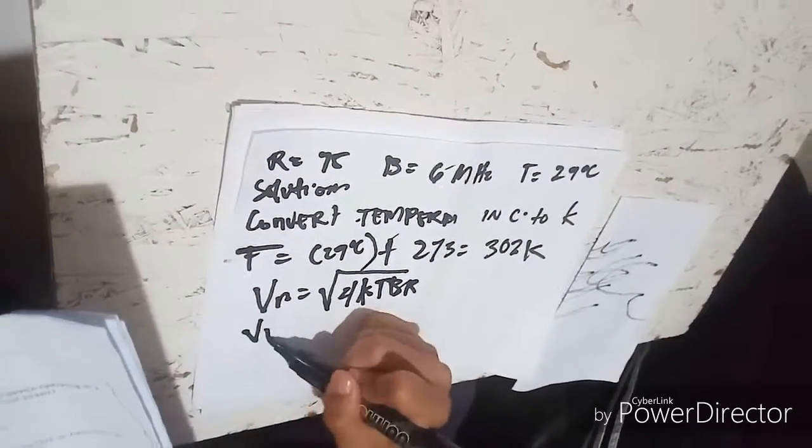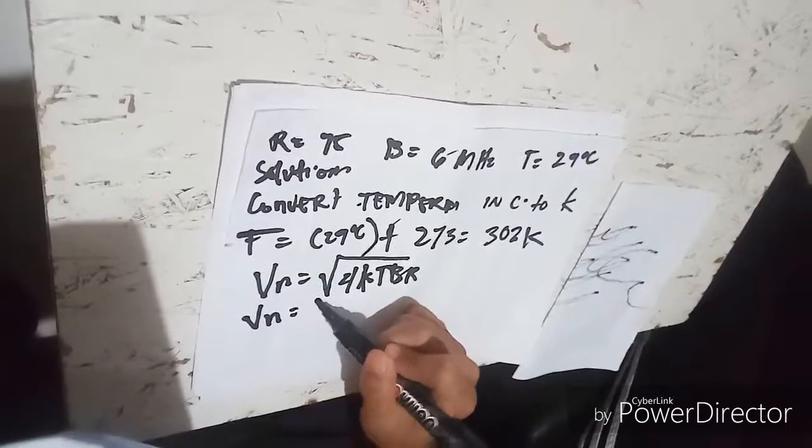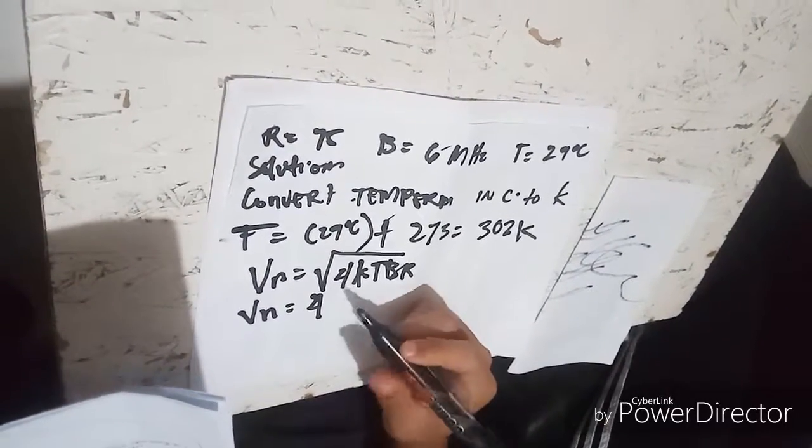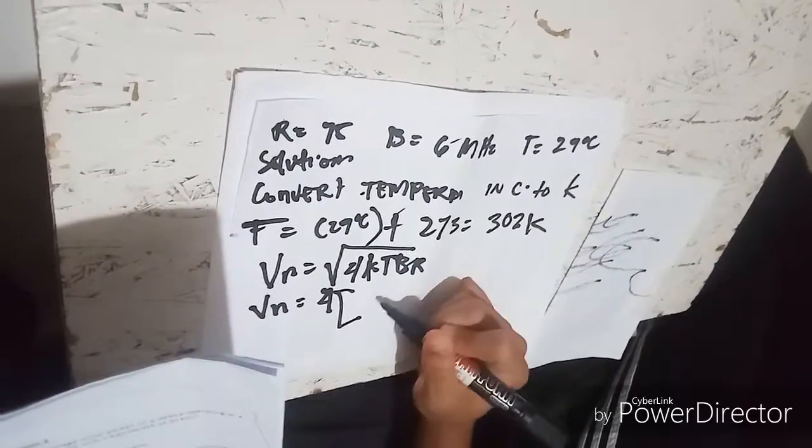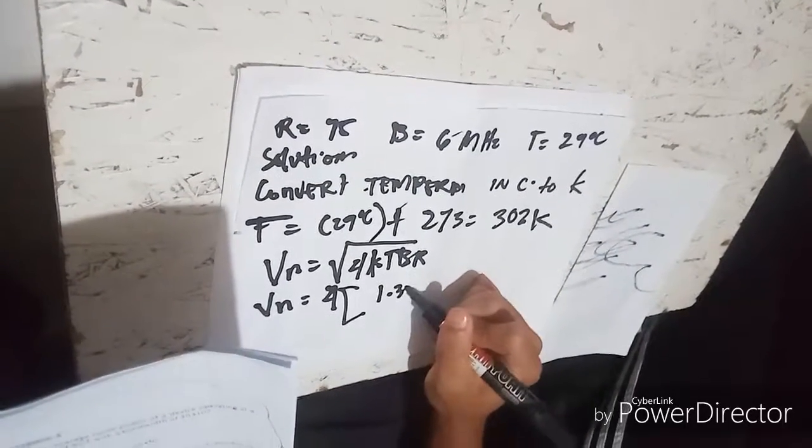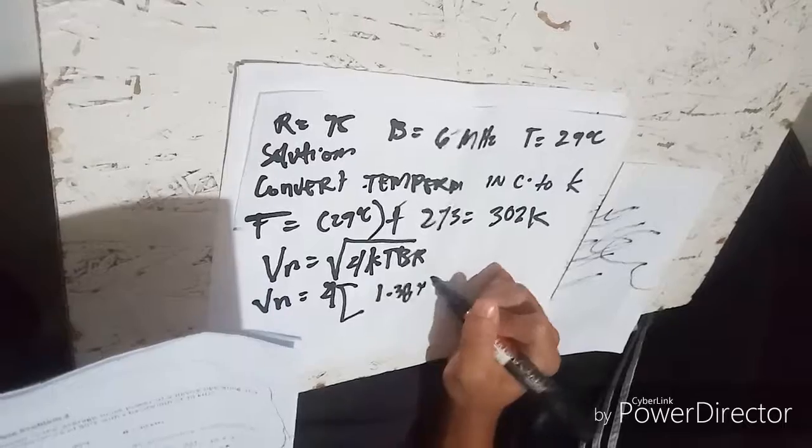V_n is equals to square root of 4 times 1.38 times 10 to the negative 23 power joules per kelvin.